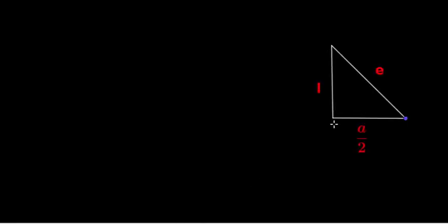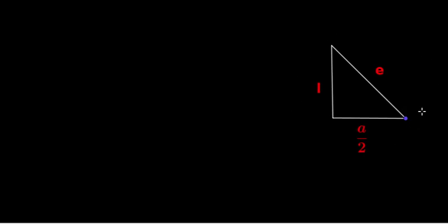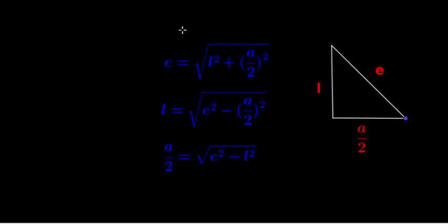You can write the relations using Pythagoras theorem. For the first right triangle (E, L, A/2): E = √(L² + (A/2)²), L = √(E² − (A/2)²), A/2 = √(E² − L²).